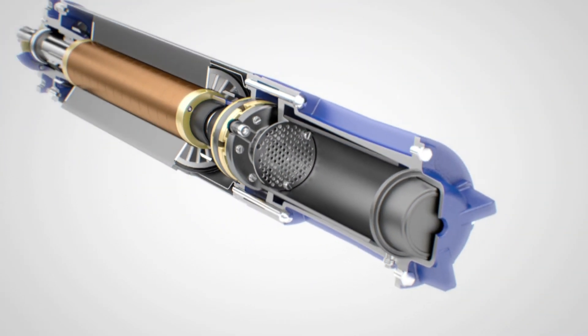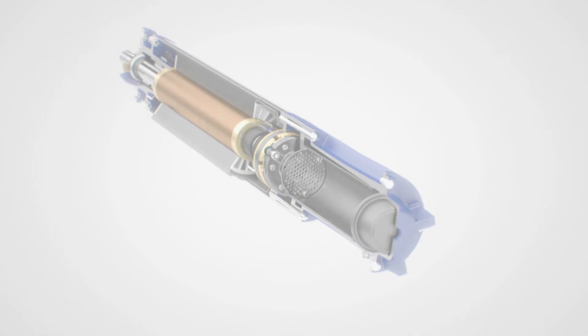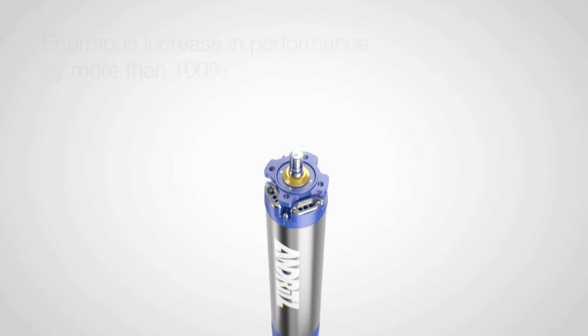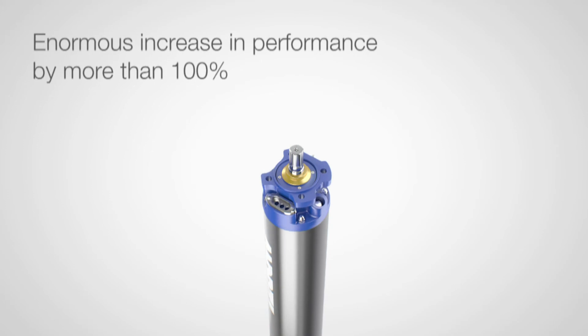IPM motors have a substantially higher performance density than asynchronous motors. Example, the performance of an IPM synchronous motor in the same size of a 45 kilowatt asynchronous motor achieves 100 kilowatts, which is more than 100%.